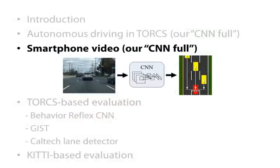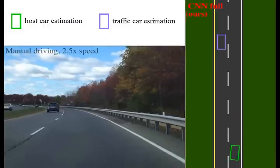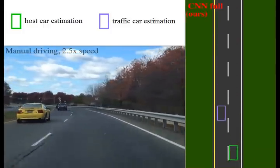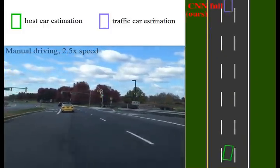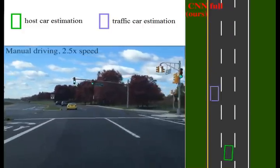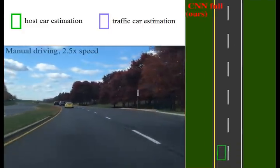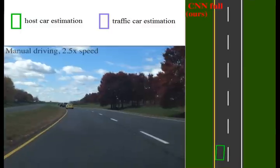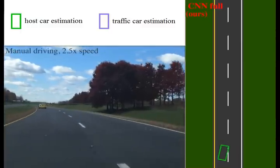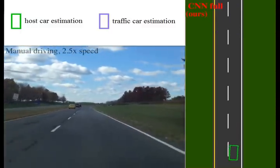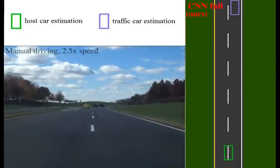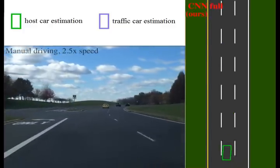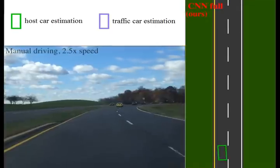We show our direct perception CNN running on real driving videos. The perception results are displayed in the visualization window. The CNN not only perceives the lane markings and the traffic cars, but also helps to determine the lane configuration. The videos were taken by a smartphone camera mounted on the windshield while the car was driven by a human driver. The direct perception CNN is trained with video game images and is now being tested on real images.